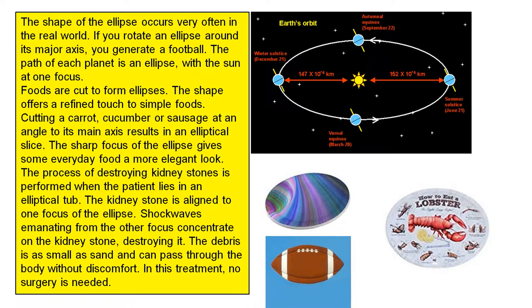Foods are cut to form ellipses. The shape offers a refined touch to simple foods. Cutting a carrot, cucumber or sausage at an angle to its main axis results in an elliptical slice. The sharp focus of the ellipse gives some everyday food a more elegant look.